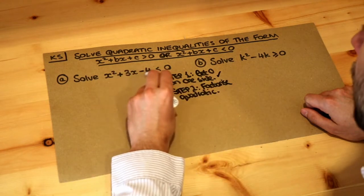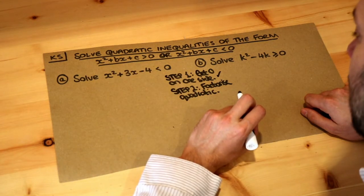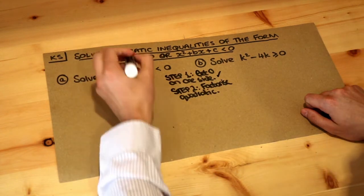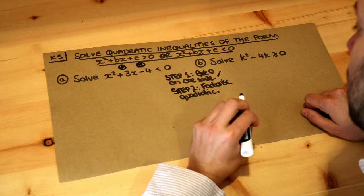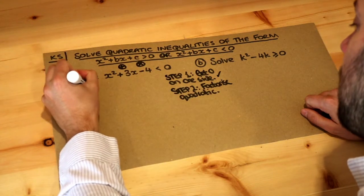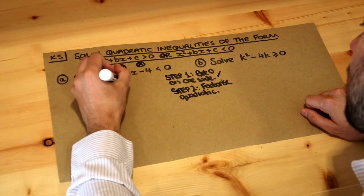So let's factorise this left hand side. Remember to factorise a quadratic we need two numbers which add up to give three and multiply to give minus four. What are those two numbers? Well they're four and minus one so it's going to be x plus four and x minus one as a factorisation.